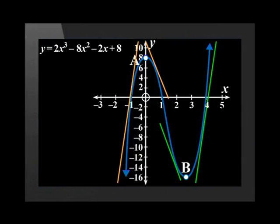At a certain point between A and B, the curve changes from being concave up to being concave down. This point, point C, is called the point of inflection.